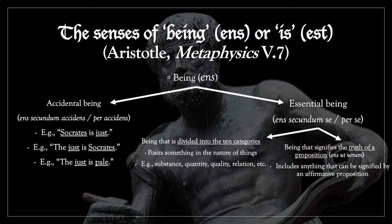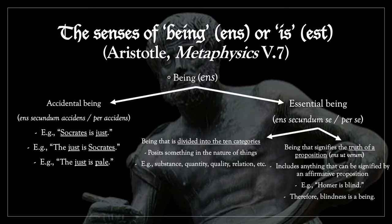The second kind of essential being, that is 'ens ut verum', includes anything that can be signified by an affirmative proposition. For instance, 'Homer is blind'. From this proposition, which is affirmative, we can conclude that blindness is a being. Now, obviously, blindness is not a being in the sense that it's some positive thing outside the mind, since blindness is in fact outside the mind a non-being — the absence of the ability to see in something that can see. Nevertheless, anything that can be put into an affirmative proposition is called a being in the sense of the truth of a proposition, or 'ens ut verum'.